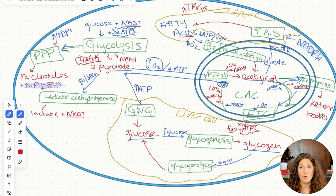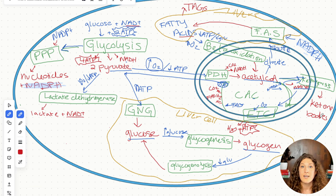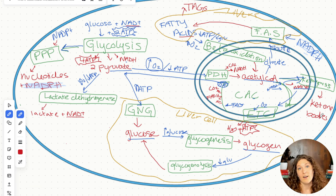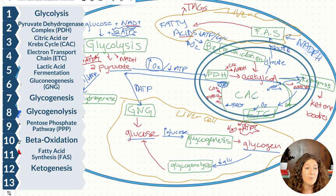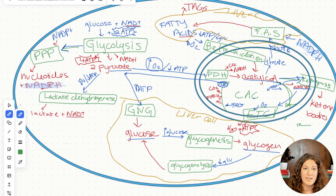The brain can only use carbohydrates as a source of energy normally. If carb sources are really low — like we haven't eaten any sugar in a while — what we'll do instead is produce ketone bodies and bring those ketone bodies to the brain for energy, so the brain can use ketone bodies instead of glucose. The brain cannot use fat directly for energy. If we don't need those ketone bodies, we can go ahead and do ketolysis.